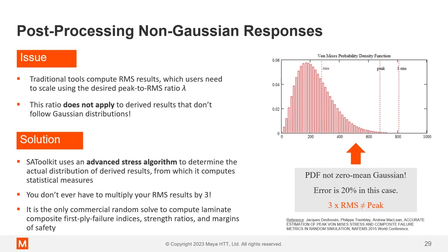And it's the only commercial random solver to compute this and to do it for the composite, for the laminate composite first ply failure indices, strength ratios, margins of safety. And this is important because this overshoot, this could be wrong in either direction. We've seen instances in composites where it under predicted. What if you just multiplied your RMS by three under predicts. So then you're not designing your part properly because the peak, the 99.7%, the three sigma would actually be higher.